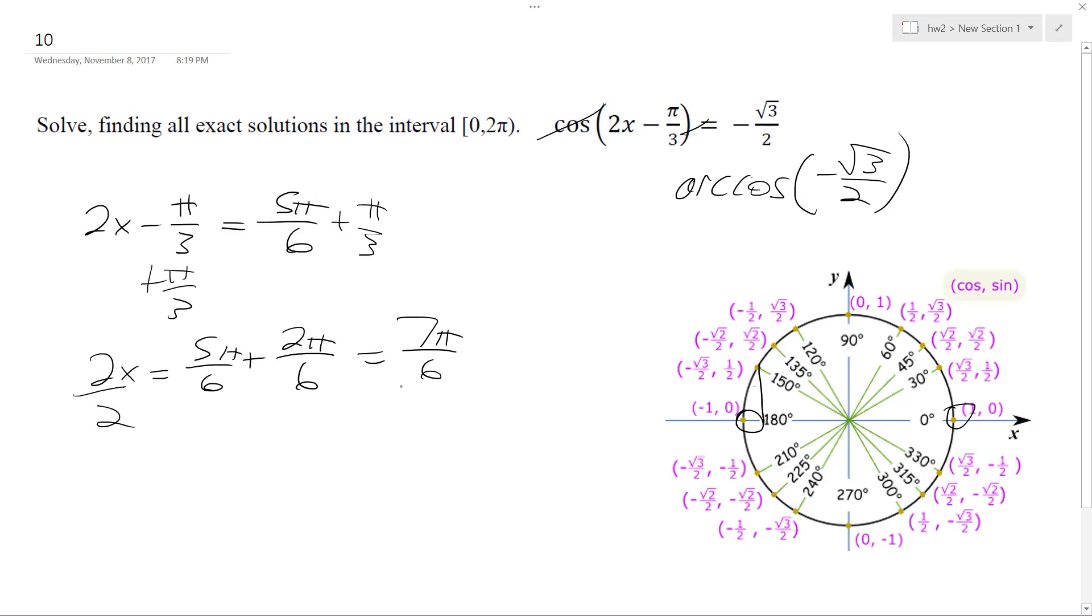So divide both sides by 2, I get x is equal to 7π divided by 12. And I just plugged this in just now, I just paused it, and it works, it's correct.